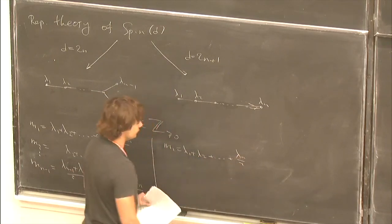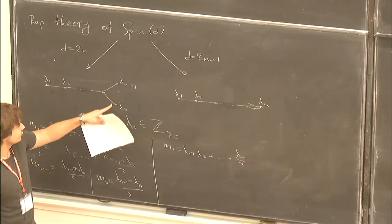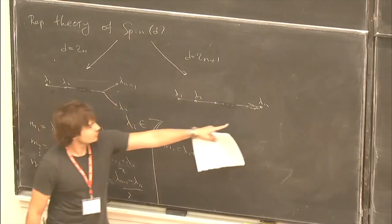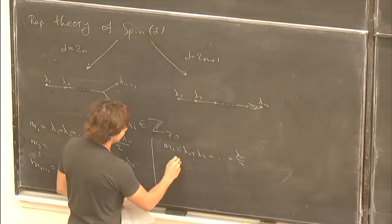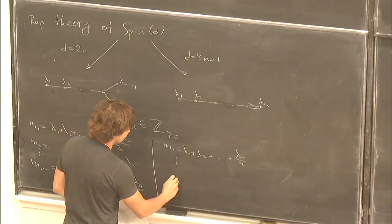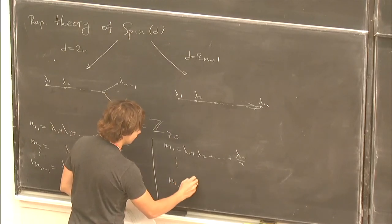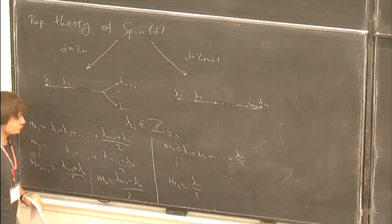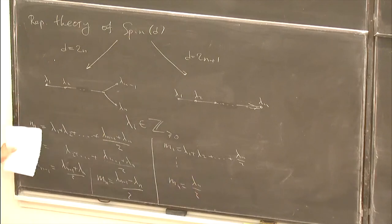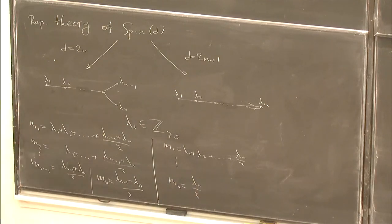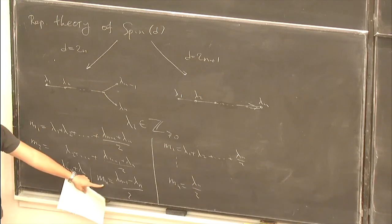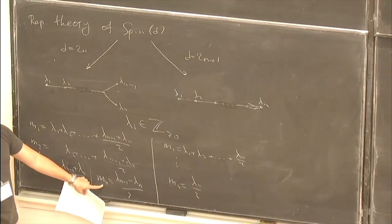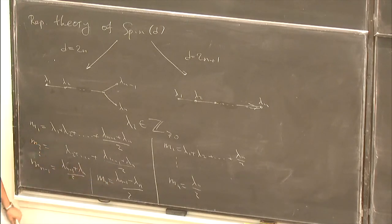Here I only divide the special nodes by two. The pattern is clear: for M_i you start summing from lambda_i, and the only interesting special case is M_N in even dimensions where you have to take the difference.